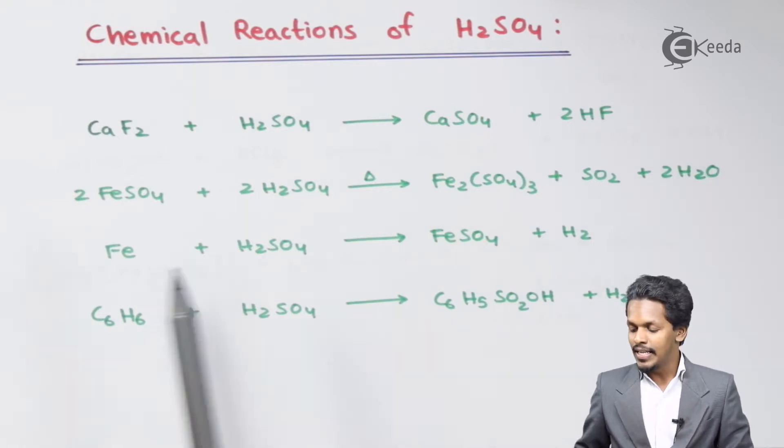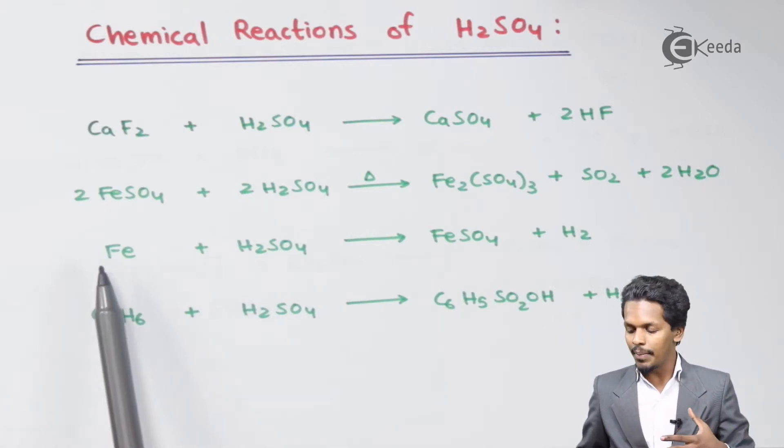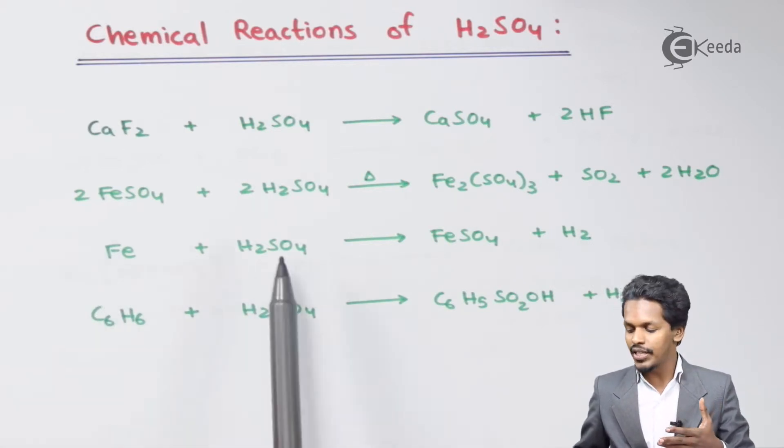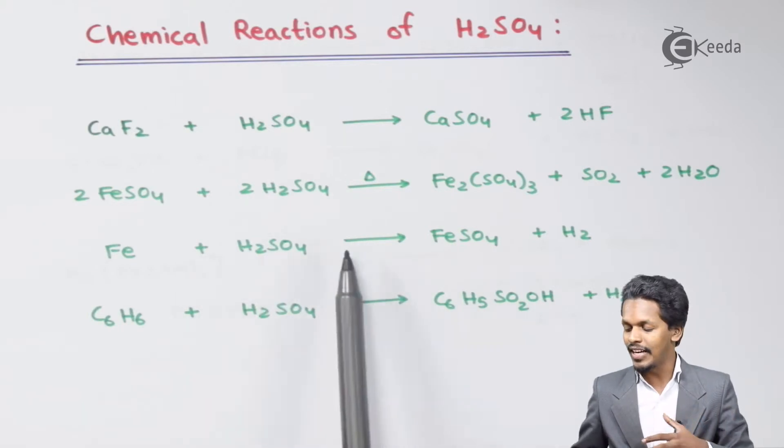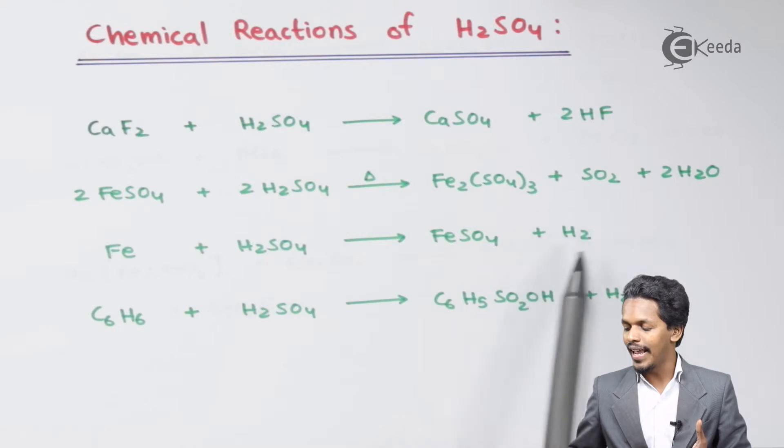Talking about the next one: as I have said earlier, H2SO4 is very much reactive to the d-block elements. In that case, whenever iron is treated with concentrated H2SO4, it will result in the formation of FeSO4 as a solid by the evolution of H2 as a gas.